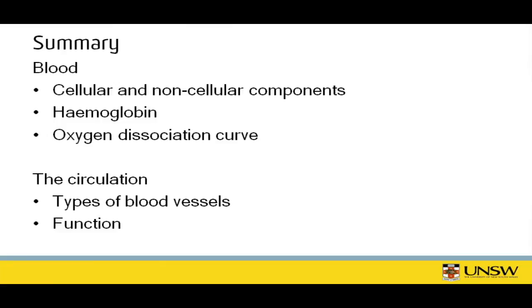In summary, blood can be approached by classifying it into cellular and non-cellular components. I've talked about hemoglobin and its important functions, and the oxygen dissociation curve which allows hemoglobin to adapt to different parts of the human body based on oxygen content. I've also talked about the circulation with regards to the different types of blood vessels and their functions. Thank you all for tuning in to the Museum of Human Disease video conferencing session, and I'm happy to answer any questions.